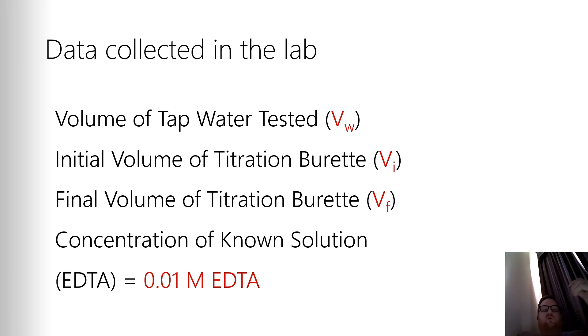The data we have are the volume of the tap water tested, which is set at 25.0 milliliters, the initial volume of the titration burette, and the final volume of the titration burette. So these are the values that you get from the images. Titration burettes are graded from 0 down to 50 at the bottom because you're actually measuring how much volume you use, not how much volume is in there. And you also need the concentration of the known solution, which is 0.01 molar EDTA.